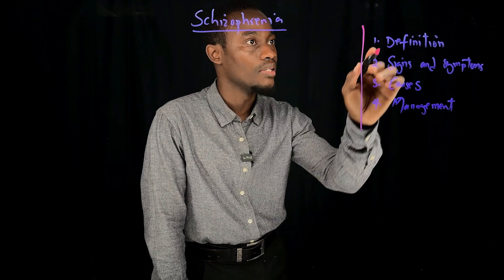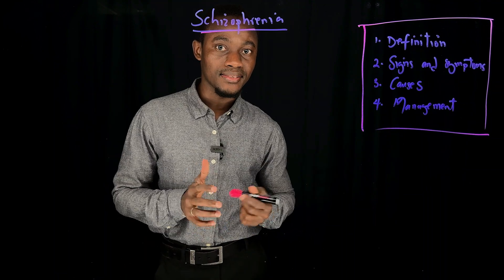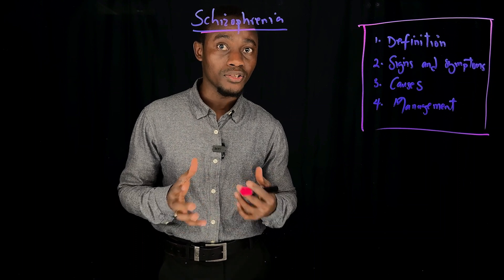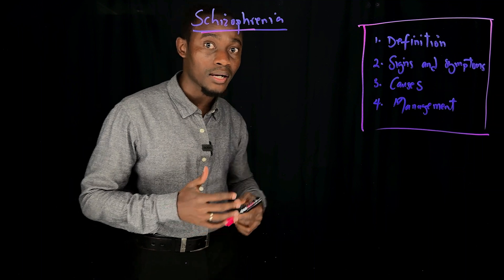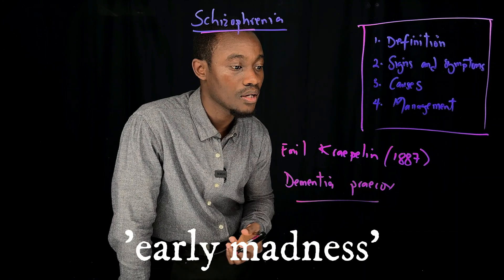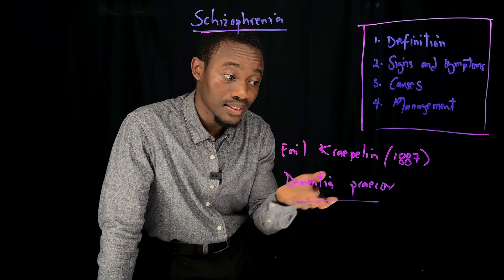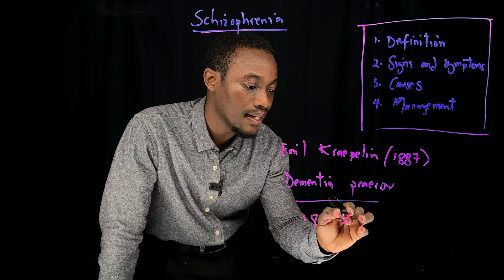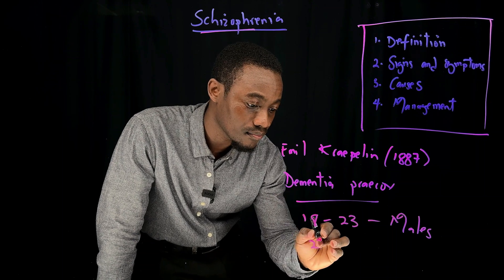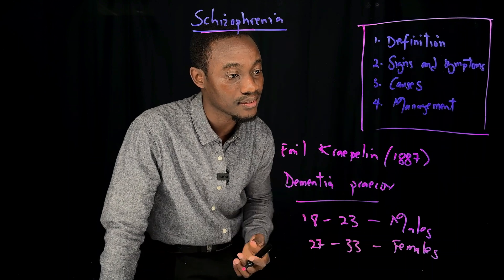Before we do any of these, let me give you a little bit of background information on how the word Schizophrenia came about. In the year 1887, a German psychiatrist by name Emil Kraepelin described a condition which is known today as Schizophrenia, but at the time he called it Dementia Praecox — which simply means early madness or madness of the youth — because of the onset of the disorder.